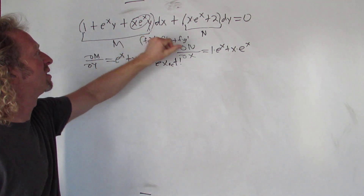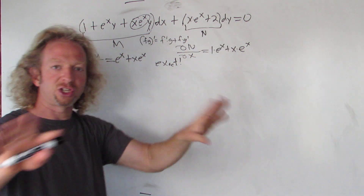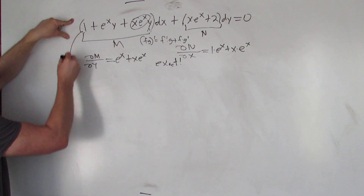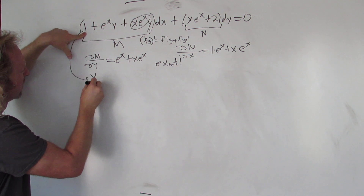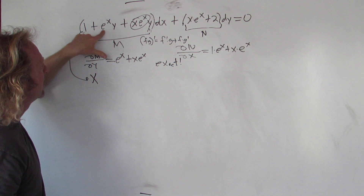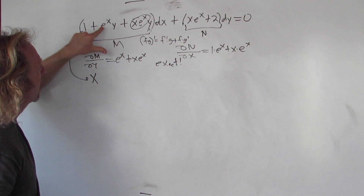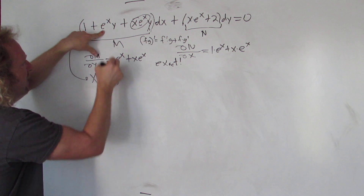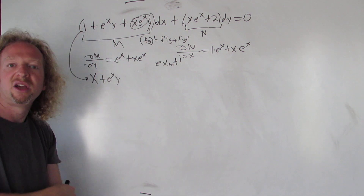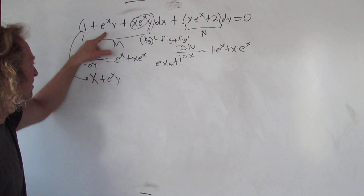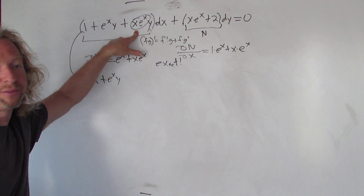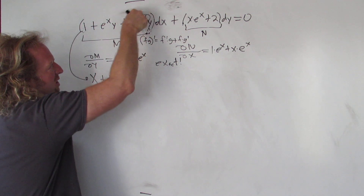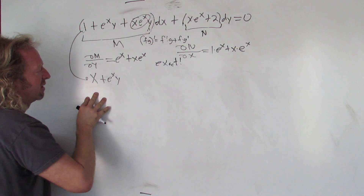So integrating M with respect to x, we have to be a little careful. The first term integrates to x. For the y·eˣ term, y is a constant, so we're integrating eˣ with respect to x — that's just eˣ, and the y hangs out, giving us y·eˣ. Then we have x·eˣ, and since we have a polynomial times an exponential, we can use tabular integration for this piece.